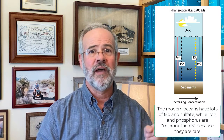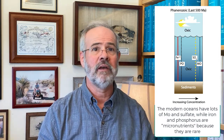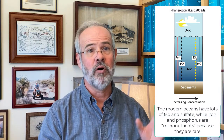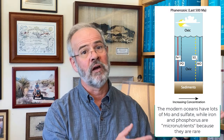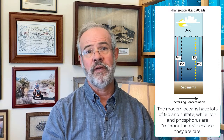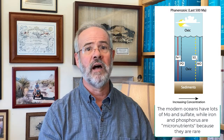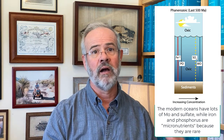The Earth froze over for a bit, a condition we'll discuss later in the class. In the Phanerozoic, that is the last 500 million years, when the ocean became completely oxic, molybdenum and sulfate became abundant in seawater, and iron and phosphorus both became micronutrients. Molybdenum is abundant because molybdenum oxides are soluble in seawater, and so they remain there until used by organisms. Sulfate is also abundant because it's produced by the weathering of sulfides, like pyrite, and does not form insoluble compounds.